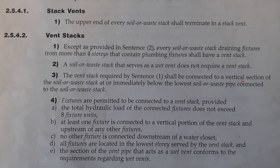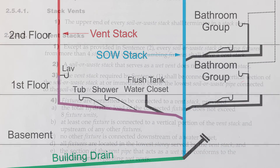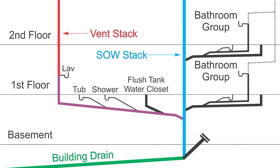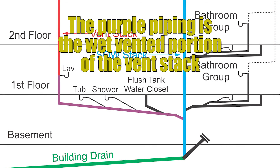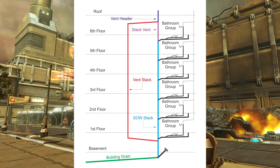Final requirement, Clause 2542, part 4E: the section of the vent pipe that acts as a wet vent conforms to the requirements regarding wet vents. This clause is talking about the sizing of this wet-vented portion of the vent stack, which is covered in the next video. That takes us through all the vent stack requirements. Stay tuned for video two where we go through the sizing of this whole system. Have yourself a wonderful day.